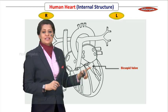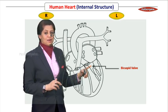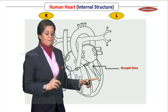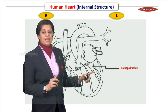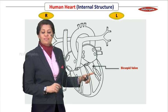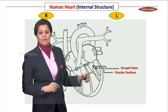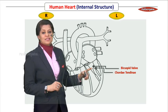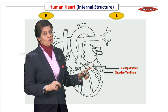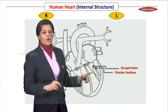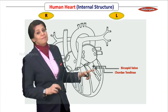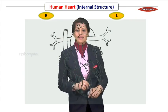Observe the bicuspid valve here. The bicuspid valve is attached to the papillary muscles by fibrous structures. These fibers are known as chordae tendineae. So three structures here: the bicuspid valve, also called the mitral valve; the chordae tendineae, these fibrous structures; and down here the papillary muscles.